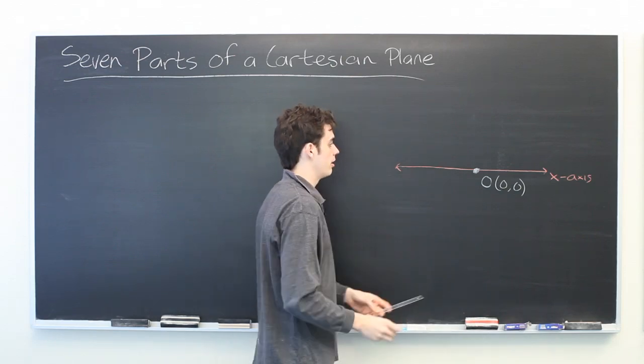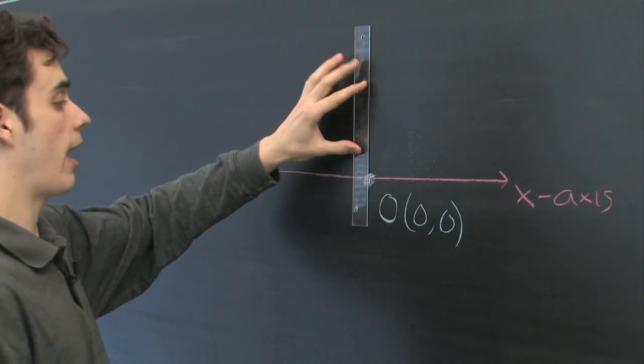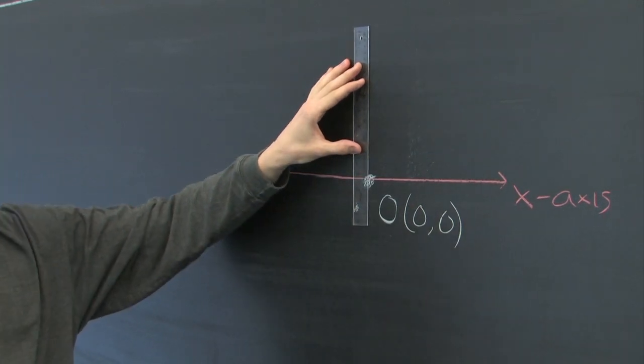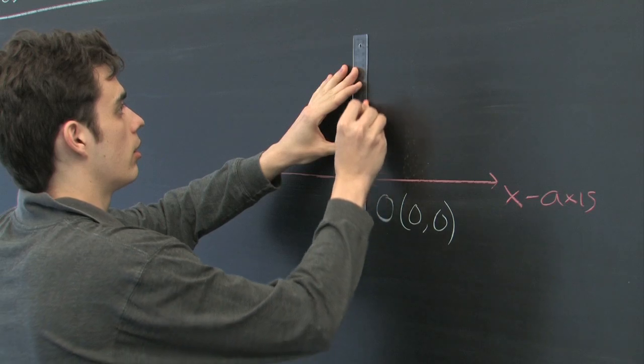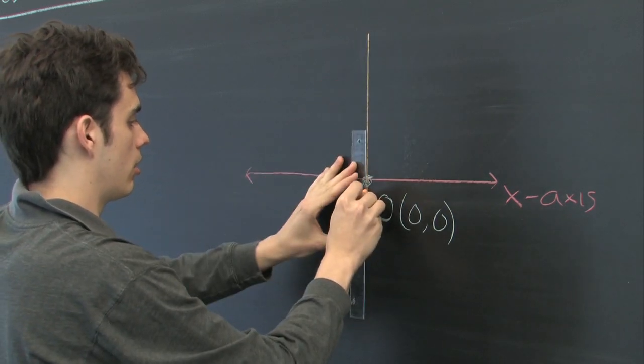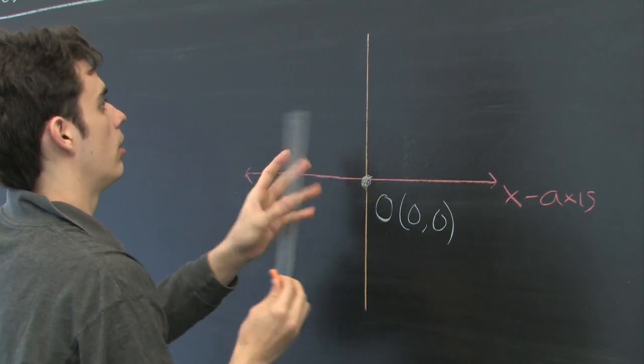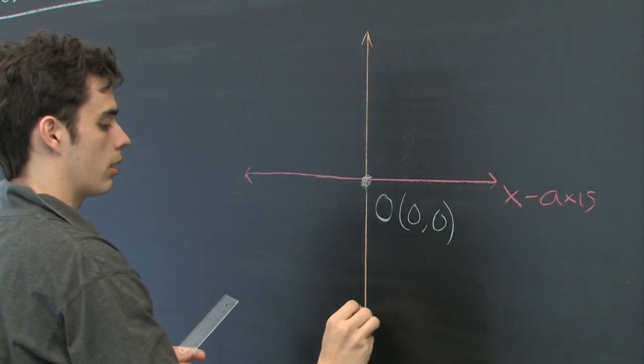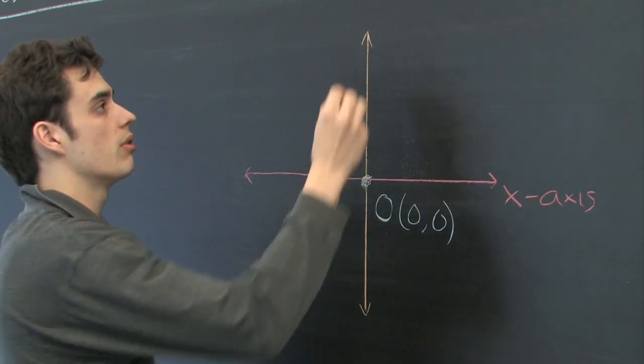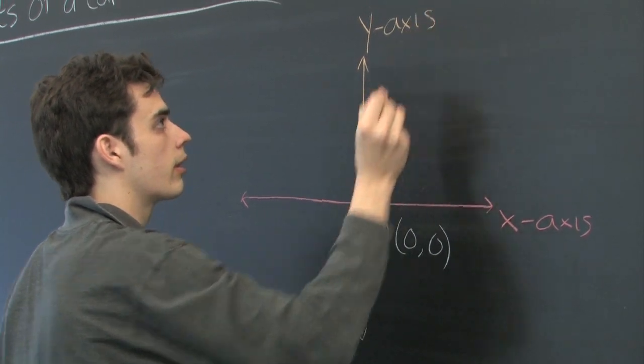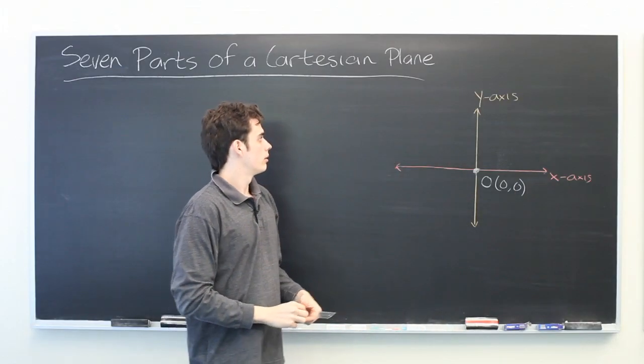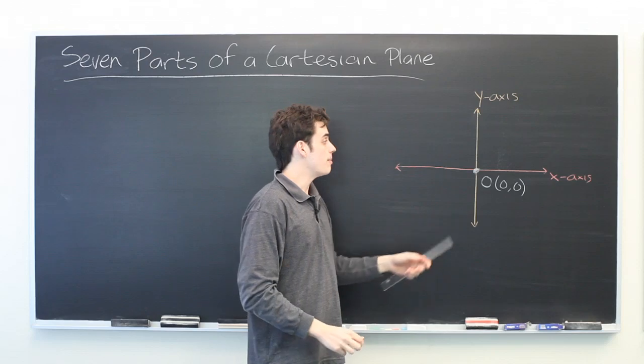Next, we have a vertical axis which intersects the x-axis at the origin. This is most commonly referred to as the y-axis. This represents our dependent variable.